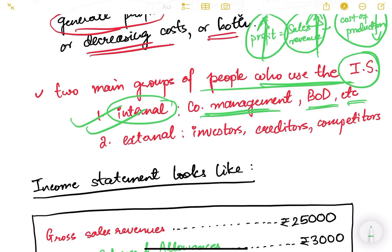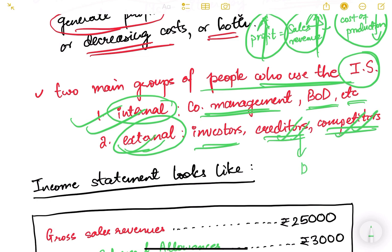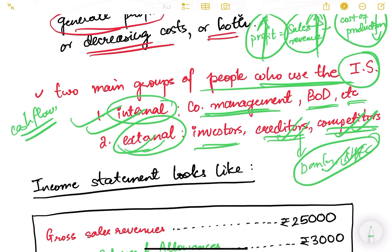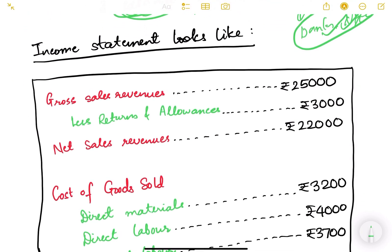The second group is the external people - outsiders who are investors in the company, creditors, and even competitors who want to see how the company is doing. Creditors meaning banks, NBFCs, and different financial institutions who are giving loans to the company also want to see the income statement to check whether the company is generating enough cash flows and enough profit to pay its debt and interest.